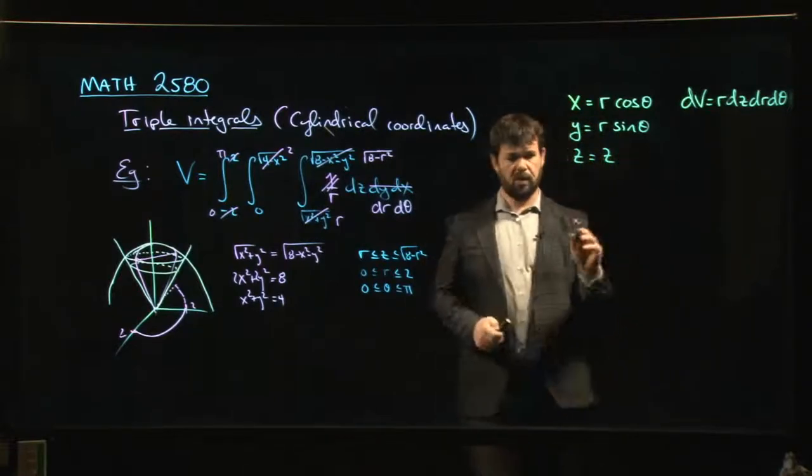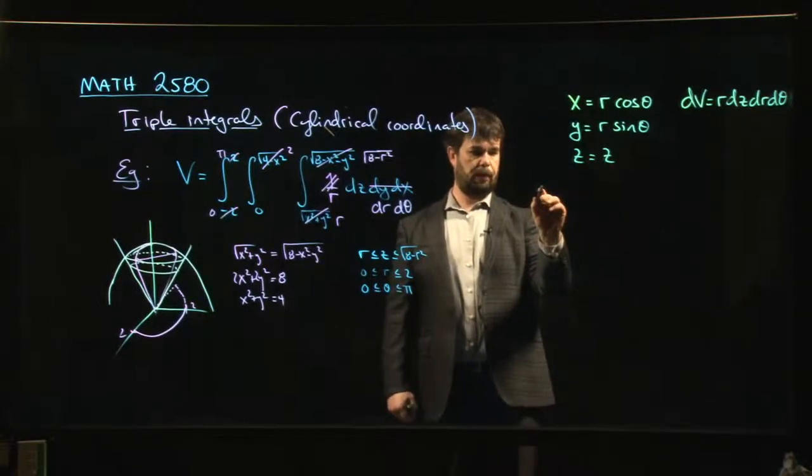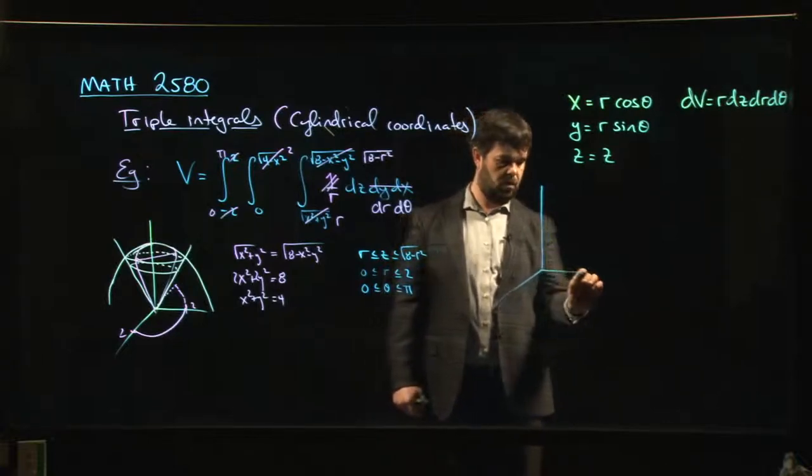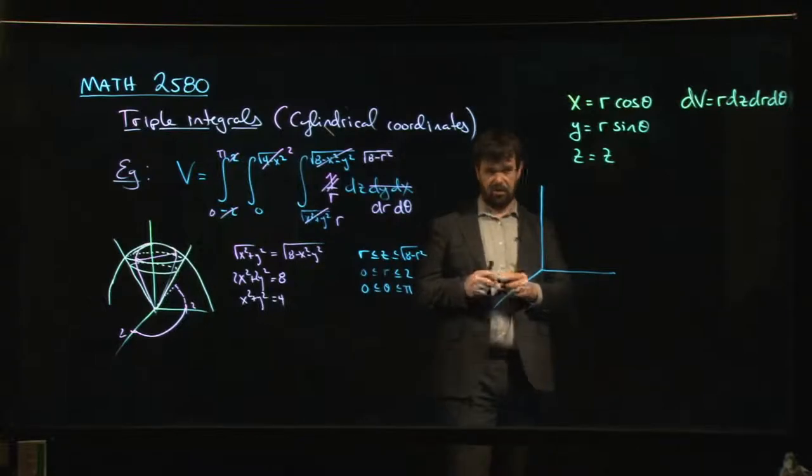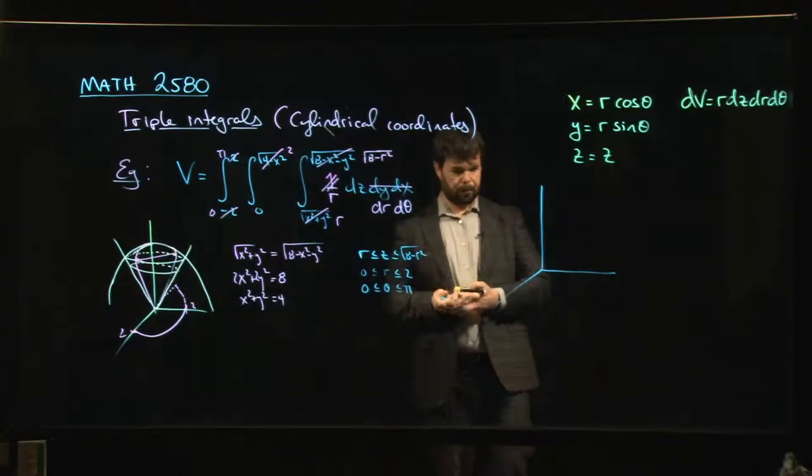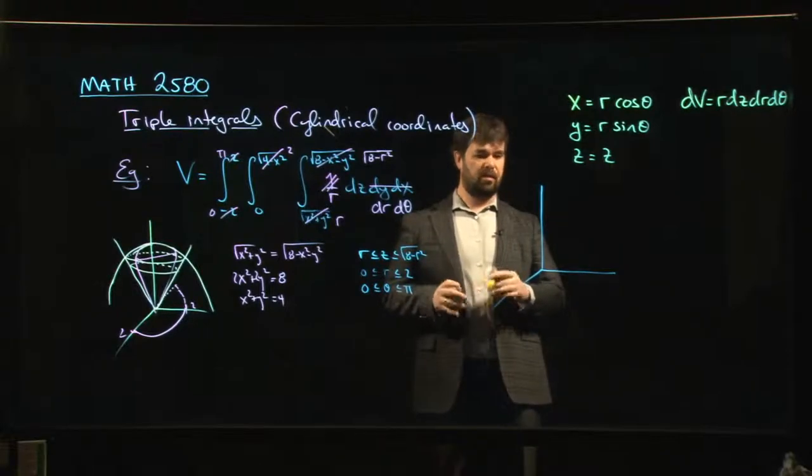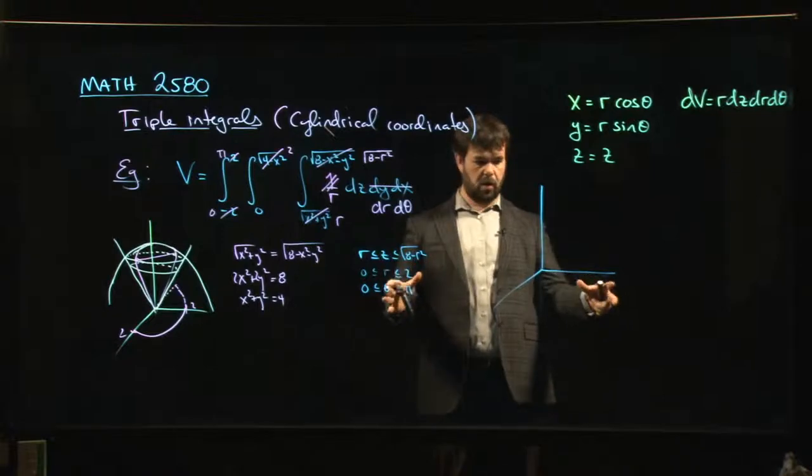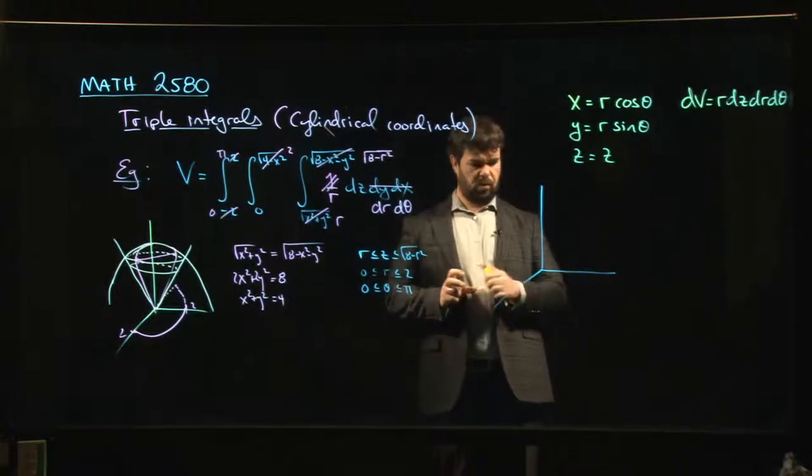The picture that you should have in mind looks something like this. Why is this called the cylindrical coordinate system? Well, it's called the cylindrical coordinate system because what you're basically doing is you're specifying where you are in three-dimensional space by, well, let's do it this way.